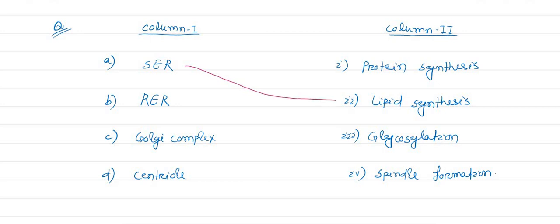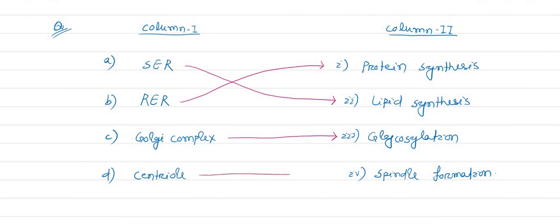And rough endoplasmic reticulum is for protein synthesis. Golgi complex here is matched with glycosylation. Centriole is matched with spindle formation.